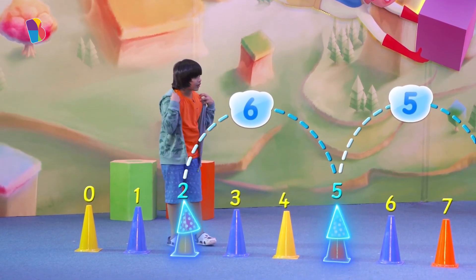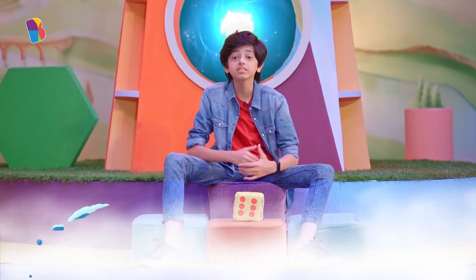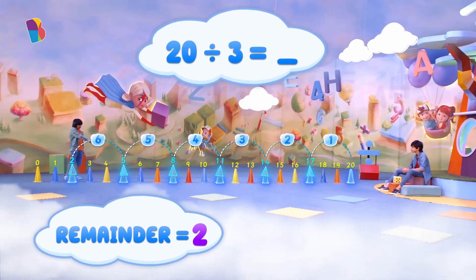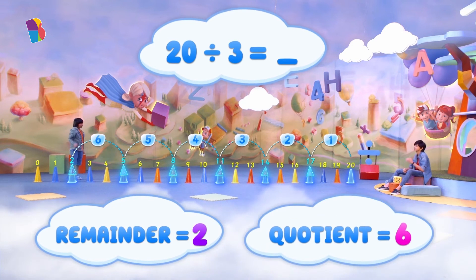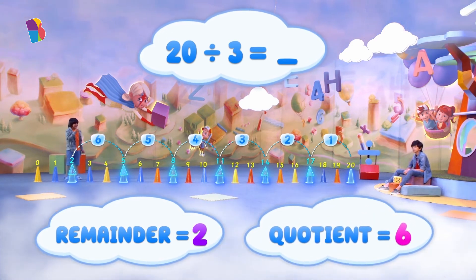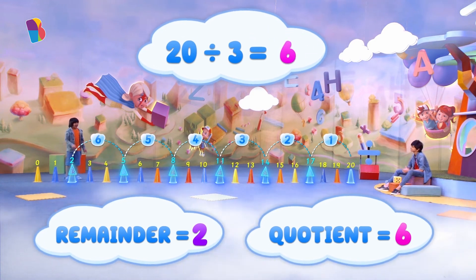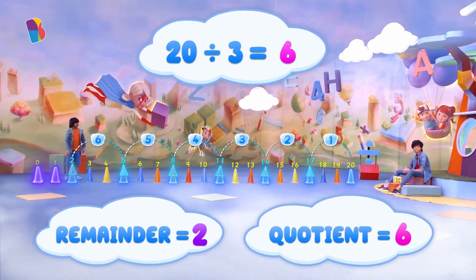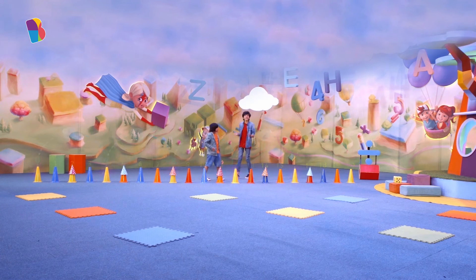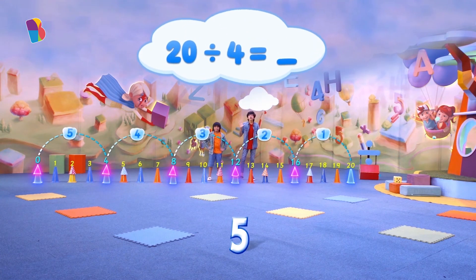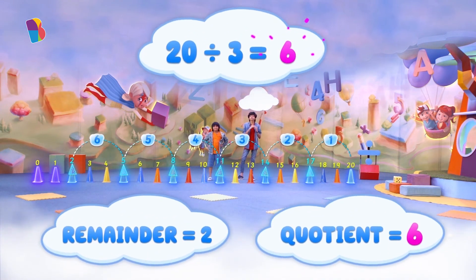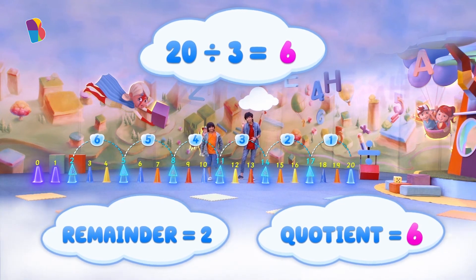There are only two cones left. That's okay Abhyad — that means the remainder is two. And one, two, three, four, five, six — the quotient is six. So twenty divided by three is... with a remainder of two. In my turn I used five hats, so five was the quotient. And in Abhyad's turn, six was the quotient with a remainder of two.